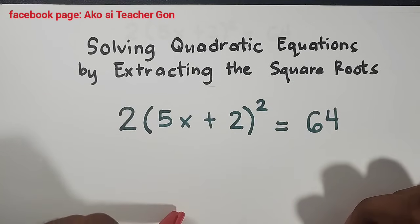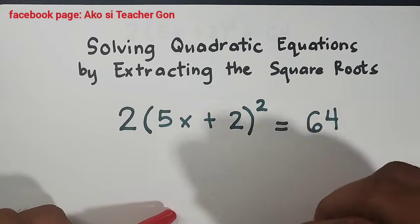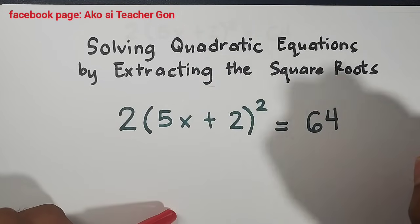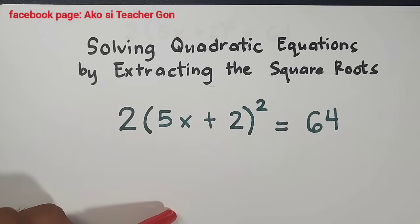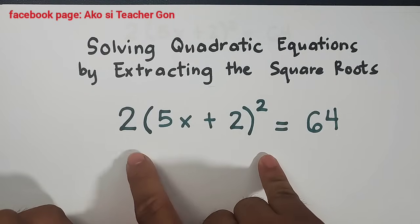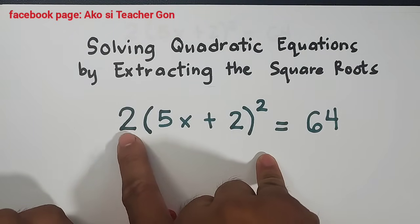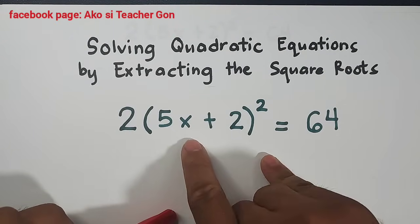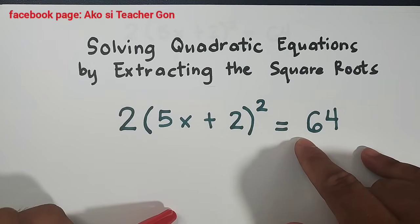Actually guys, we have a lot of videos about quadratic equations and you can browse through our YouTube channel. And what we have here for today is that we have the equation 2 times 5x plus 2 squared is equal to 64.